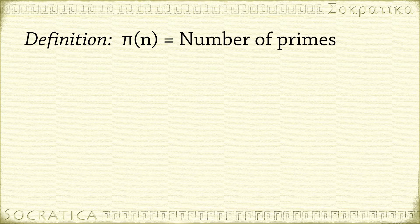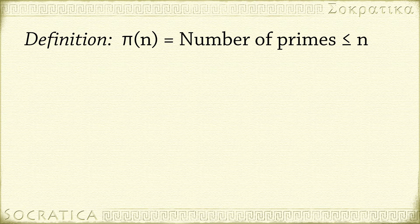To quantify this, let's define a function π(n) to give the number of primes less than or equal to n. This function has nothing to do with the number pi. This is just the traditional name for the function.